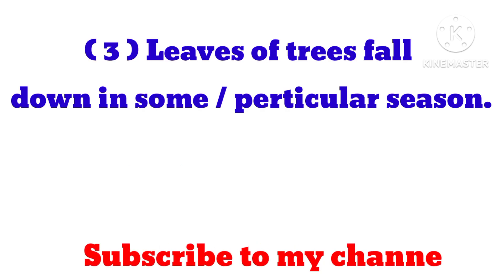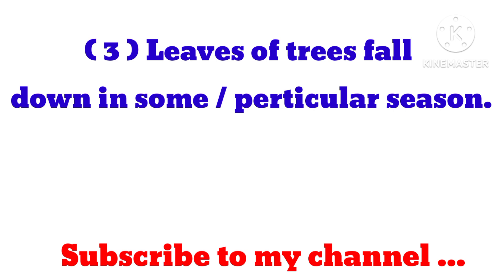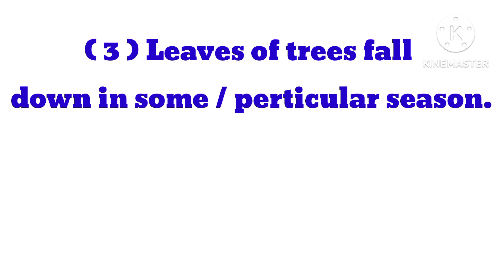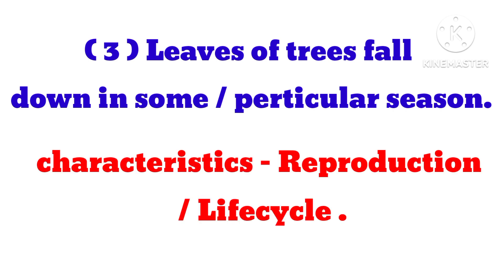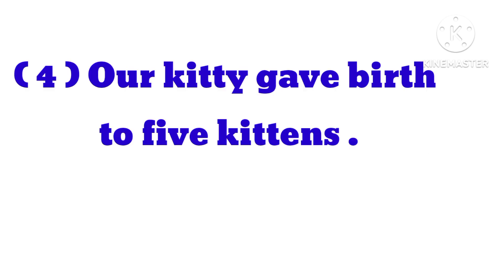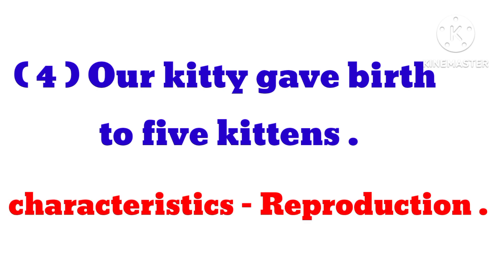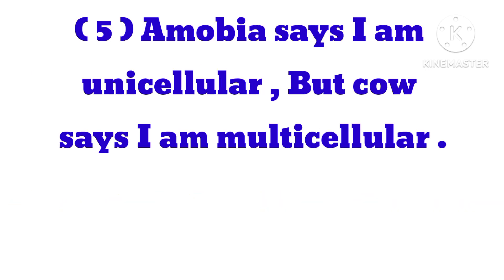Leaves of trees fall down in a particular season. Characteristic 4. Our kitty gave birth to 5 kittens. Characteristic 5: Reproduction.